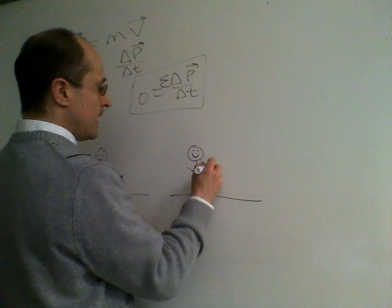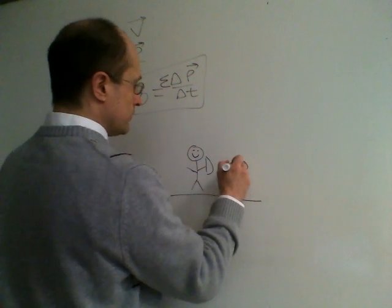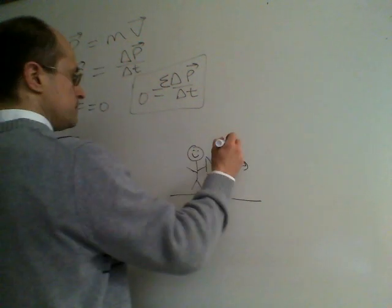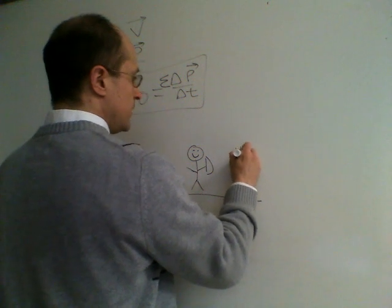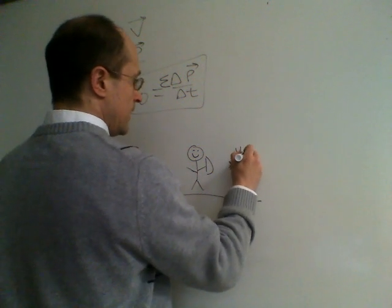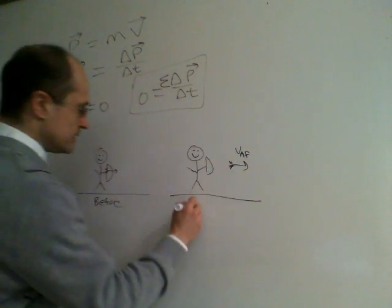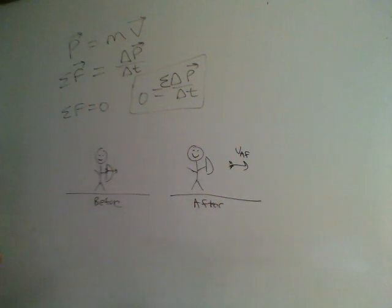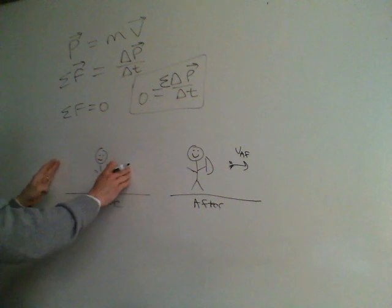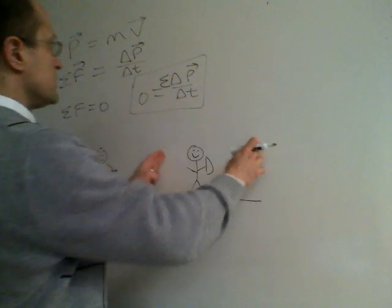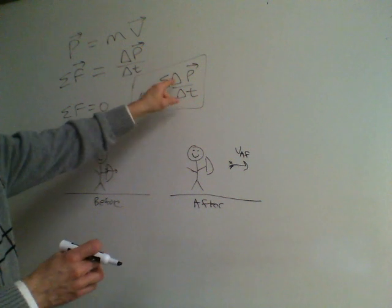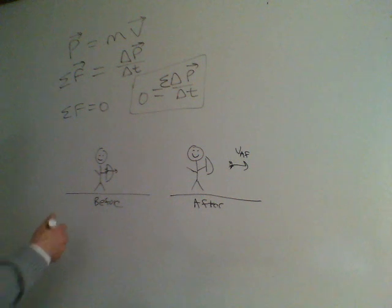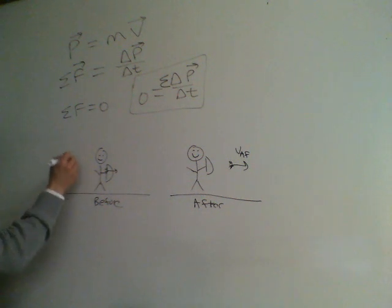After the person shoots the arrow, the arrow is moving with some velocity VA final — the velocity of the arrow. We need to look at the momentum of our system before and the momentum of our system after, because there should be no change in the total momentum of our system.